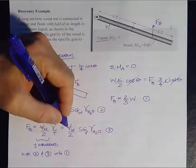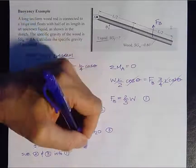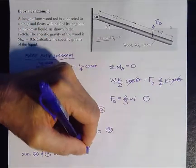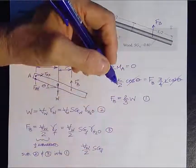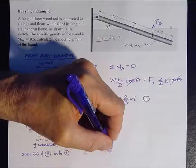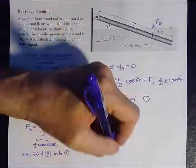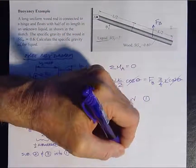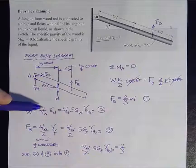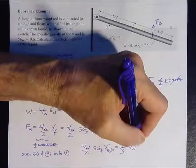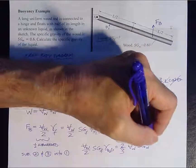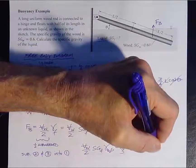And we're going to have the volume of the wood upon 2, Sg of the fluid, gamma of the water, equals 2 thirds times the weight, which is volume of the wood, Sg of the wood, which we know, gamma of H2O.